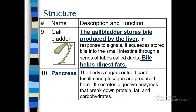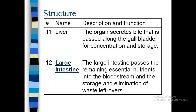This is the gallbladder and this is the pancreas, with the pancreatic duct, gallbladder, hepatic duct, and others. Next is the liver — the organ which secretes bile juice, which is passed along to the gallbladder to be made concentrated and stored. The large intestine passes the remaining essential nutrients into the bloodstream. If some nutrients are left, the large intestine absorbs these into the blood, and handles storage and elimination of waste left over.